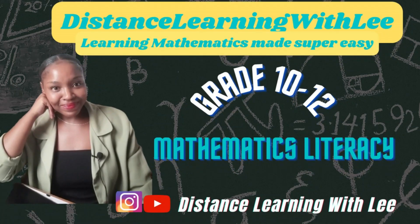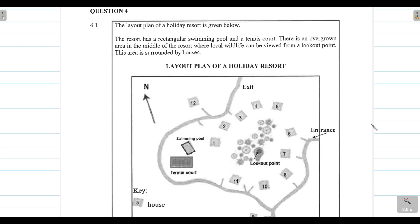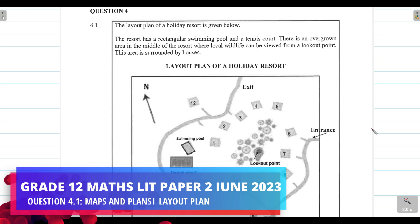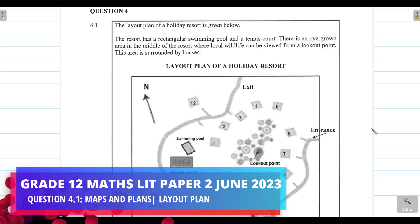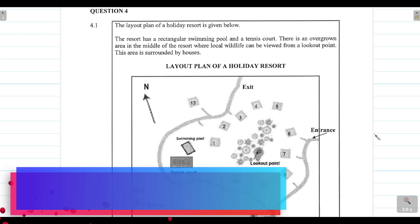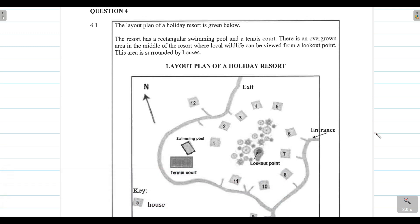Welcome to Distance Learning with Lee, where I make learning mathematics super easy. On today's video tutorial, Grade 12s, we are going to be tackling Question 4.1 from the Grade 12 Mathematical Literacy Paper 2 that was written in June 2023. Question 4.1 deals with maps and plans — in particular, we're going to be looking at a layout plan of a holiday resort, which is a sub-topic for maps and plans.